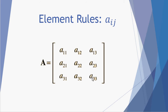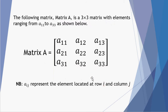These are called elements. So let's look at how we can use a set of element rules to fill in a matrix. We have here from element A 1 1 all the way down to element A 3 3 — nine individual elements within matrix A. We can use IJ notation, where I represents the row number and J represents the column number.